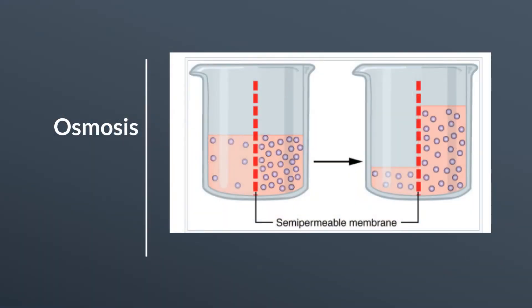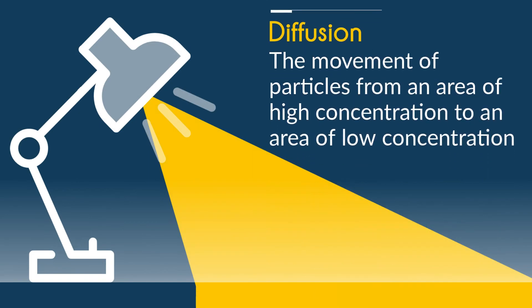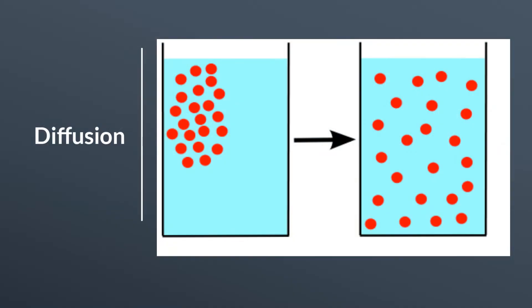Next we have diffusion. Diffusion is the movement of particles from an area of high concentration to an area of low concentration. And here's what this may look like.